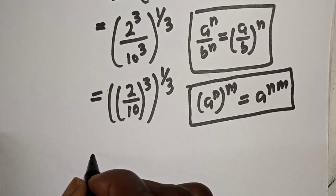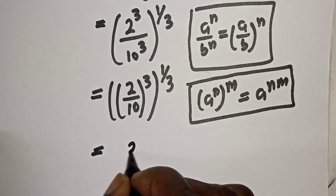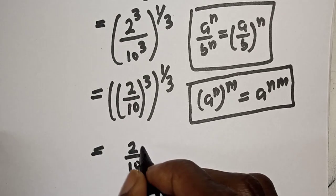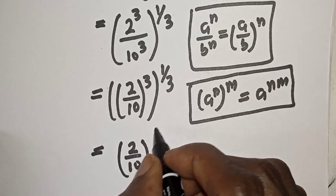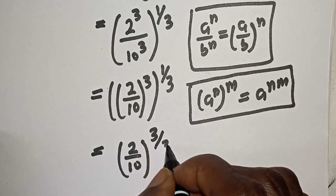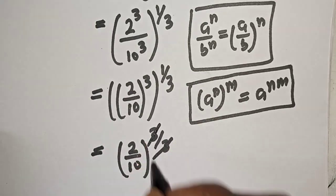Then this is equal to 2 over 10 raised to power 3 times 1 over 3. The 3 over 3 will cancel.